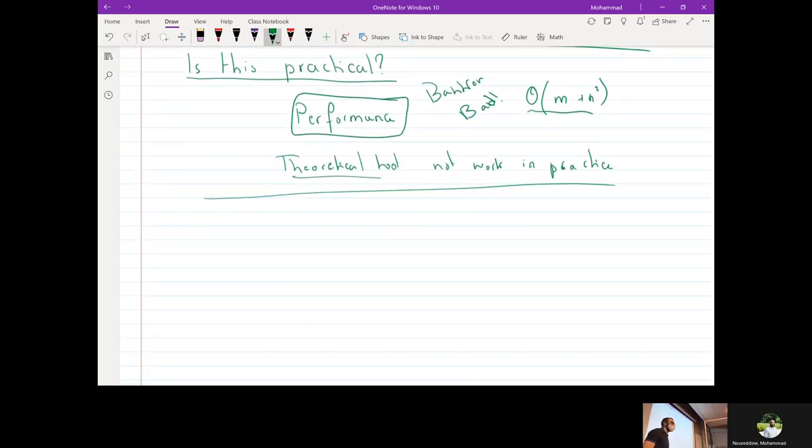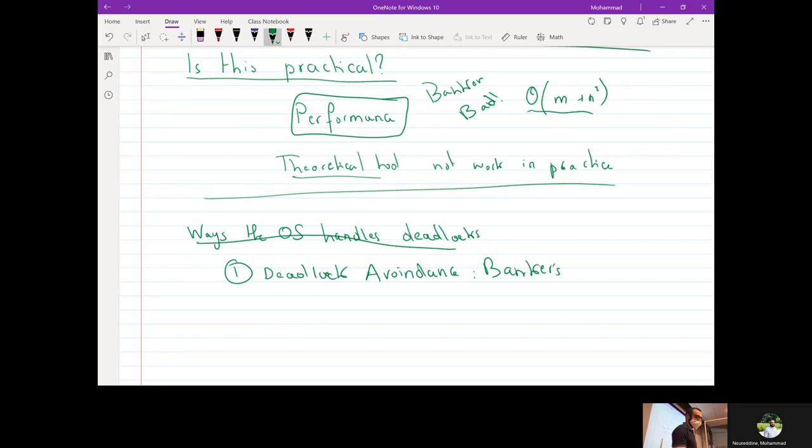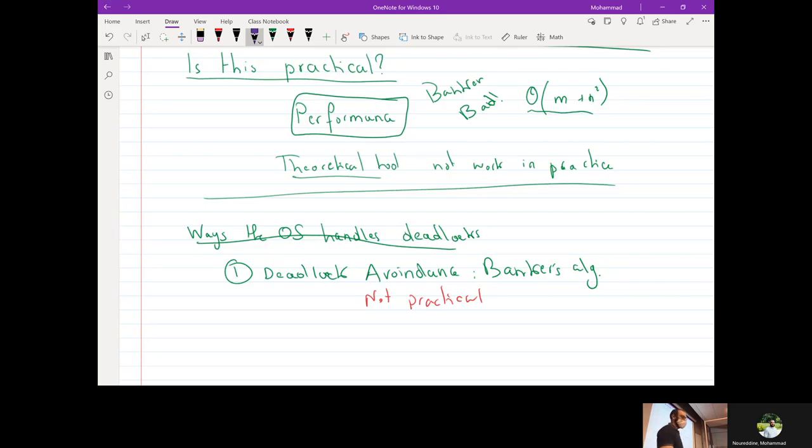So what other techniques would you suggest that the OS does? Other than this guy? So ways to handle, ways the OS can handle. We introduced the banker's algorithm, but we saw it's not very practical. So what other techniques would you think the OS can do? Yeah, so we wait until we get a deadlock and then if we get a deadlock, undo it, and then maybe run this algorithm just once to get us out of the situation. Yep, exactly.